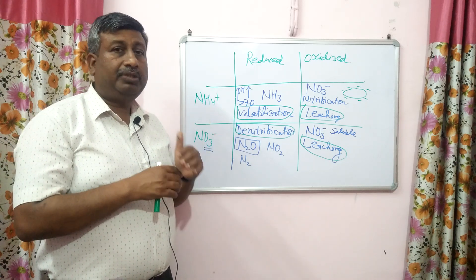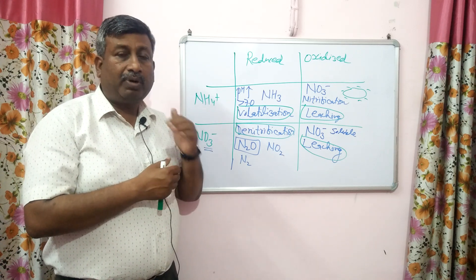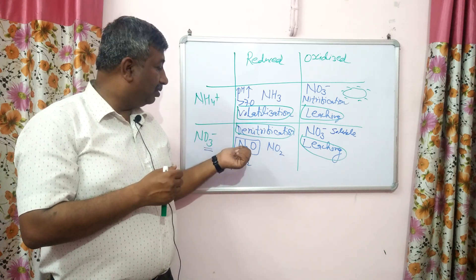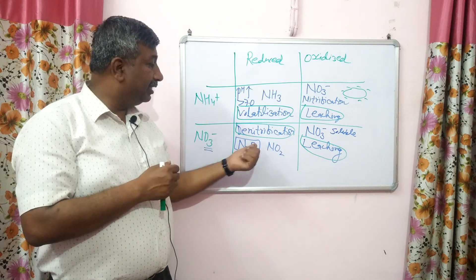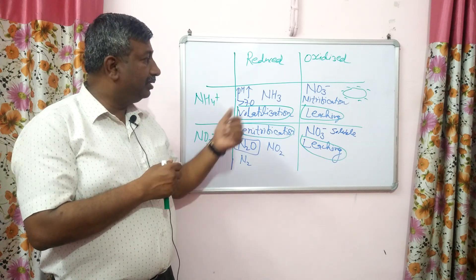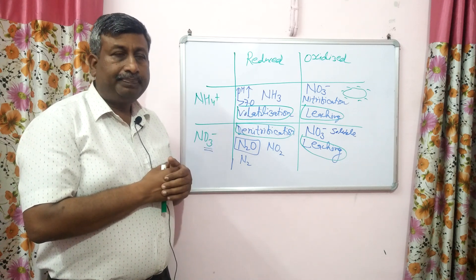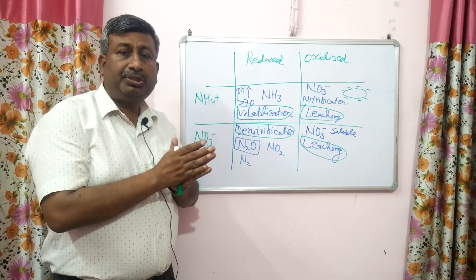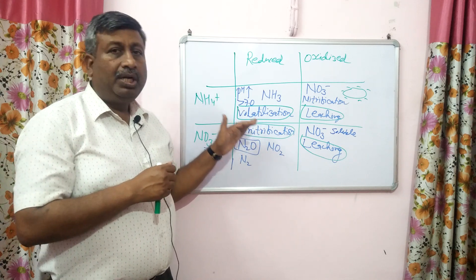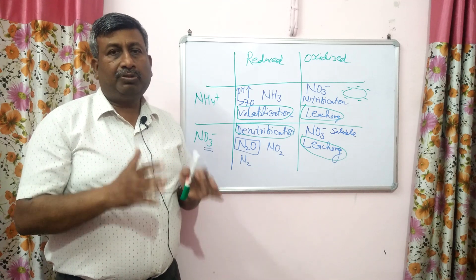For example, in transplanted rice where we maintain reduced (waterlogged) conditions, if we apply nitrate-containing fertilizer there is a high chance of denitrification. That is why we apply ammonium-containing fertilizer and keep the soil pH below 7 to avoid volatilization loss. Under reduced conditions, there will definitely be more loss of nitrogen by either volatilization or denitrification.